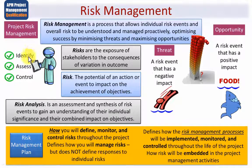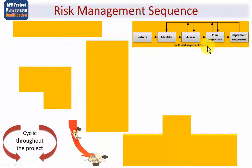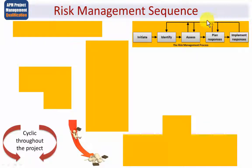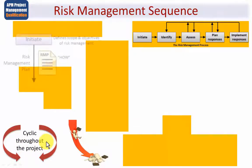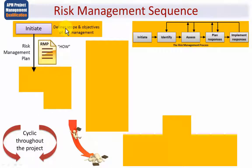The risk management process can be seen as a series of steps: initiate, then identify, then assess the risks, then plan the responses to each risk, and then implement those responses. This is an iterative process — the risk management sequence is cyclic throughout the project. The first step, initiate, involves defining the scope and objectives of risk management, all captured in the risk management plan, which explains how risk management will be applied in this particular project.